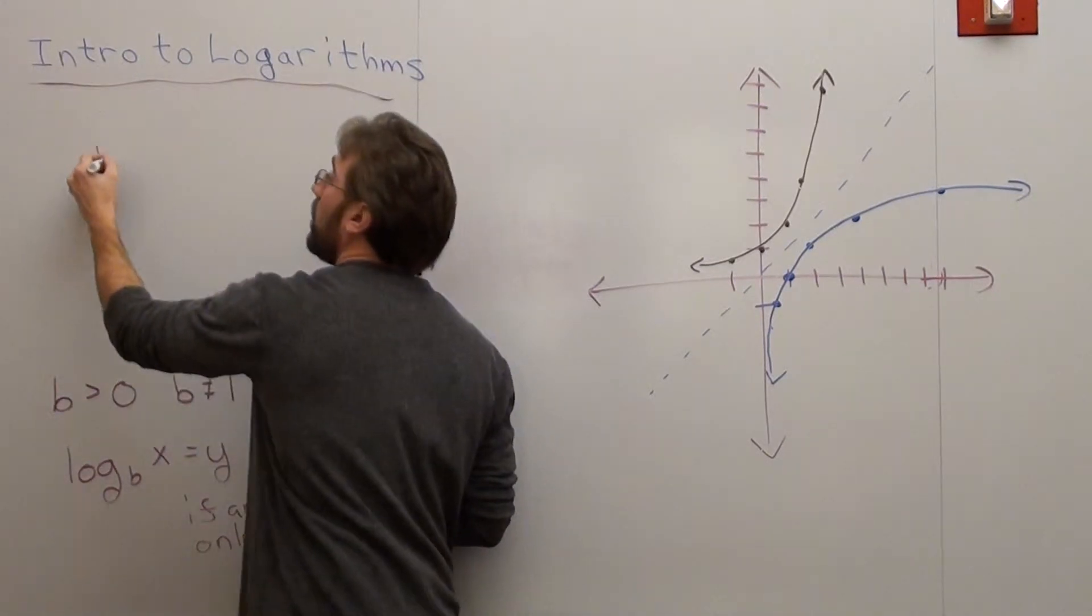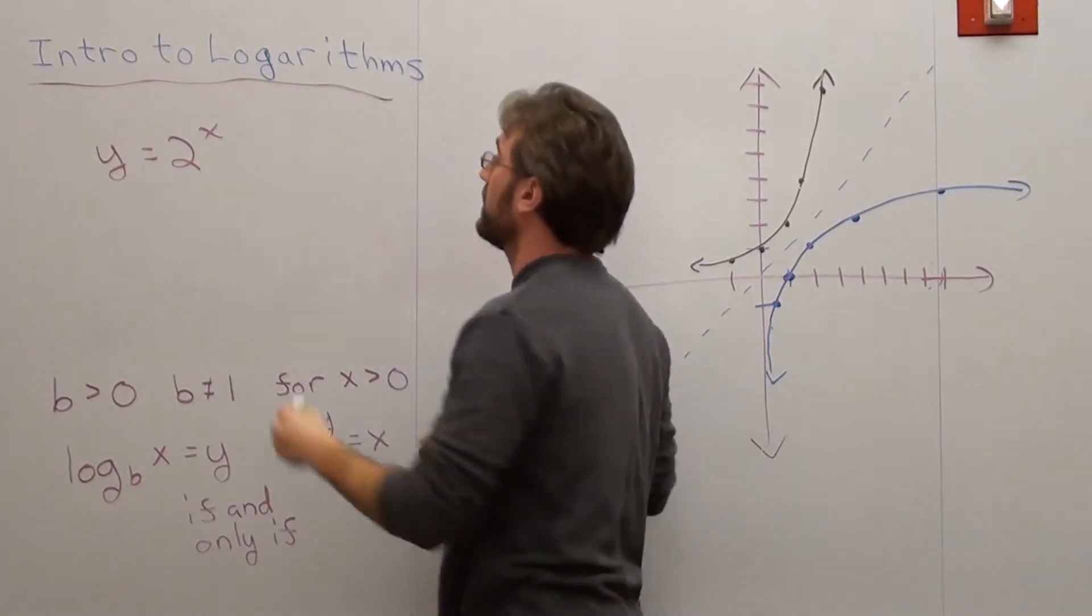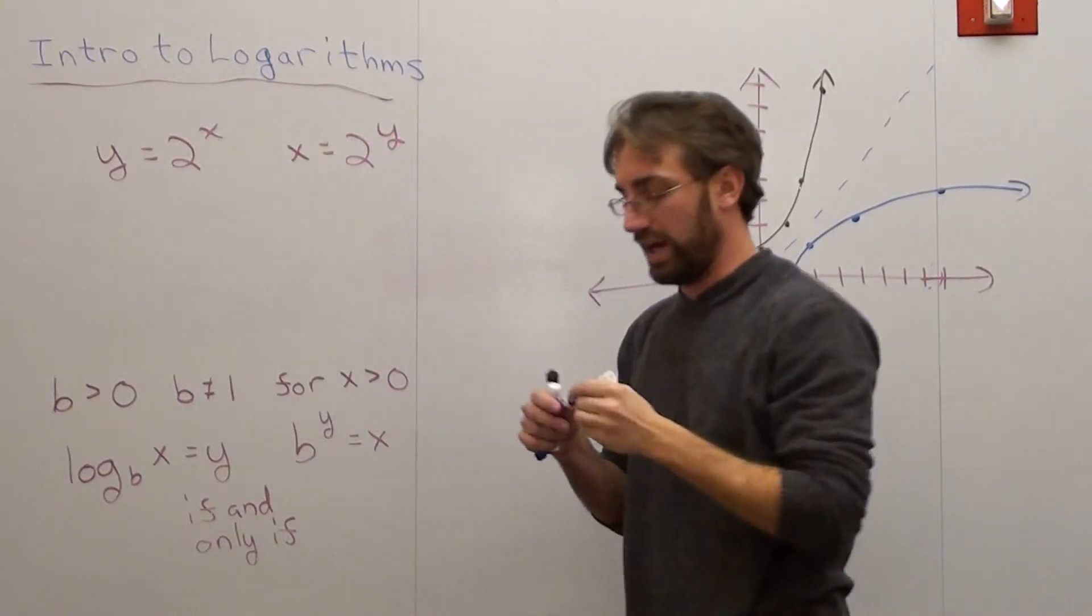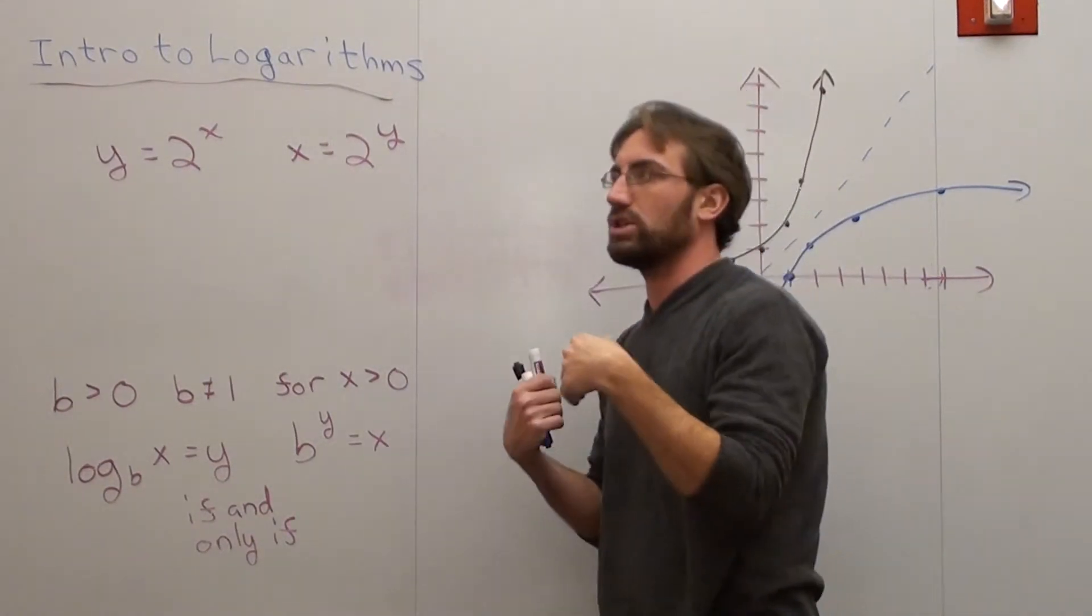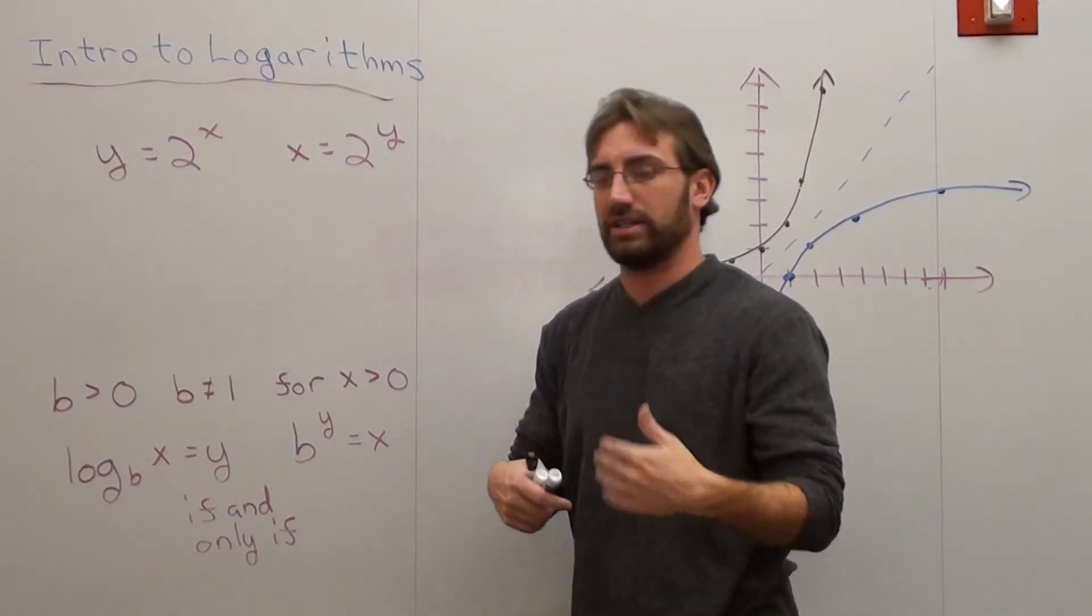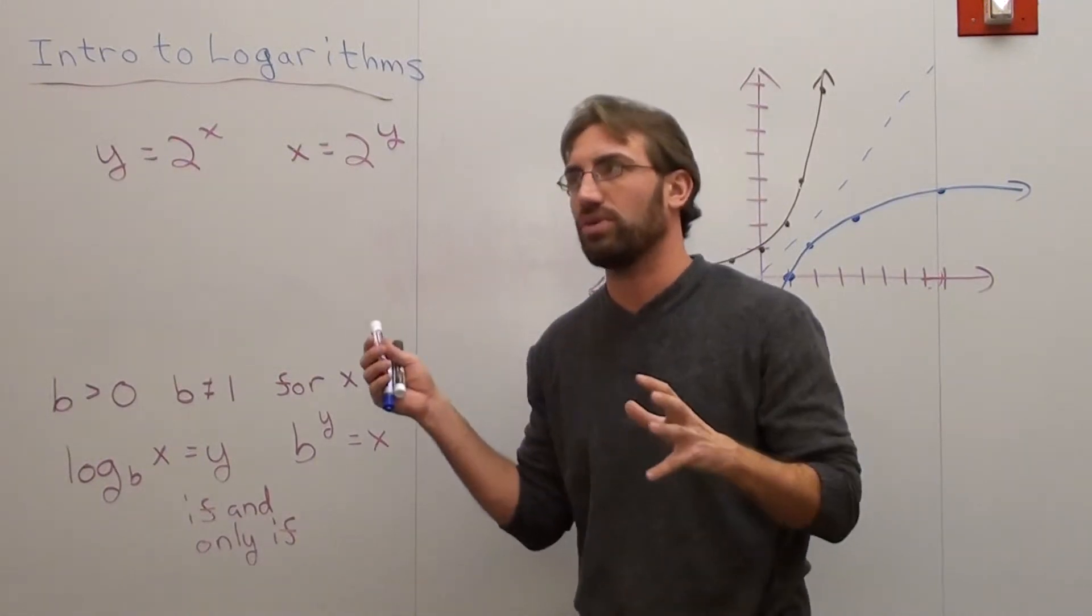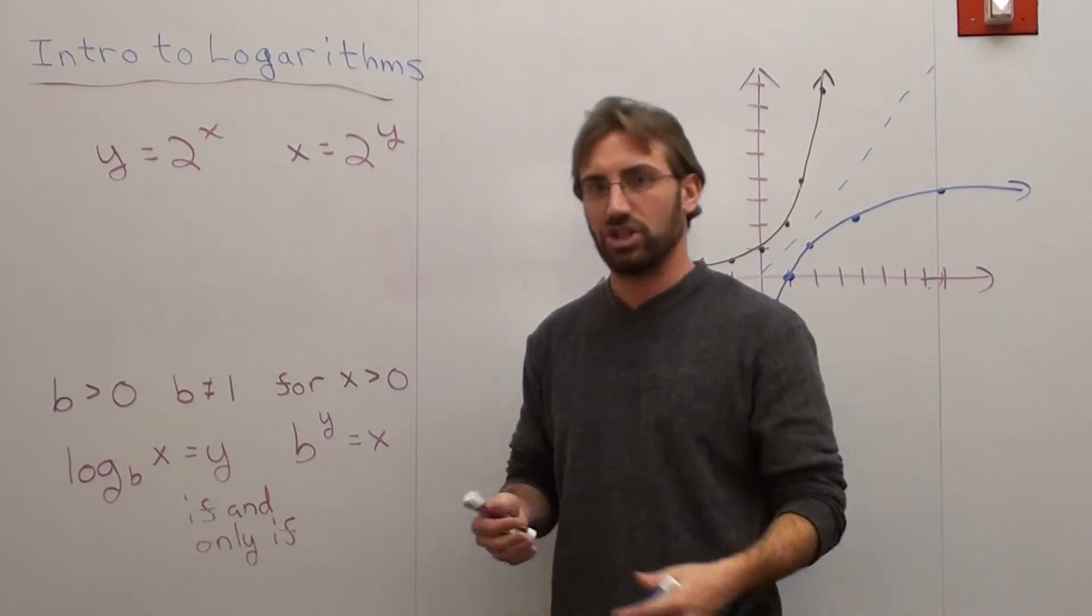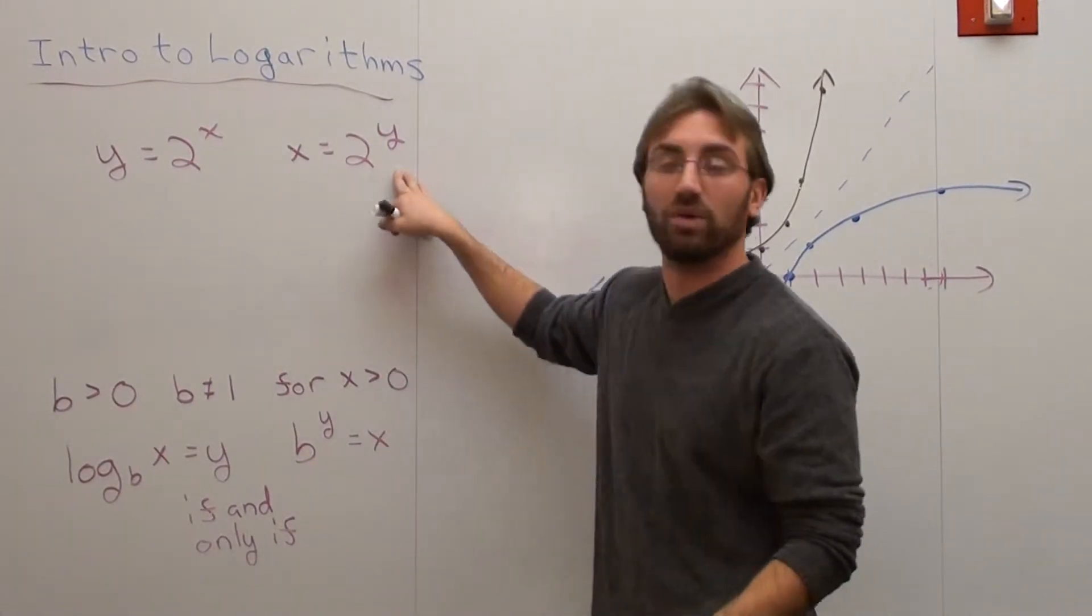So here we go. We have y equals 2 to the x. Which, when I invert it, is x equals 2 to the power of y. Now, whenever I'm solving, x is always my input and y is always my output. The problem is that y is my input right now and x is my output. So I've got to formulate the function or figure out the function properly so it works out. And basically what I do is I do its inverse operation in order to solve for y. In order to get y by itself. Because I do have to get y by itself.